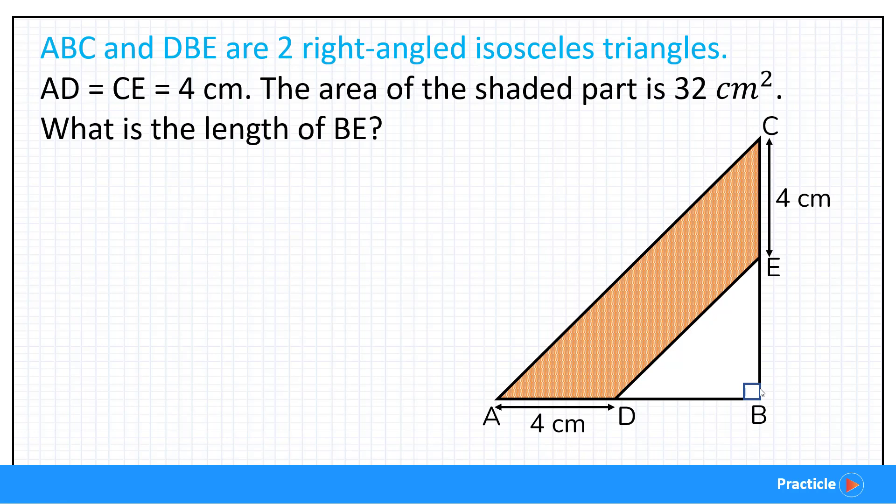Now the next thing that we need to figure out is what isosceles triangles are. Isosceles triangles are just triangles with two equal sides. So looking at what we have, this means that when we look at the triangle ABC, AB is going to be as long as CB. And what about the smaller triangle? The length of DB must be the same as EB, correct?